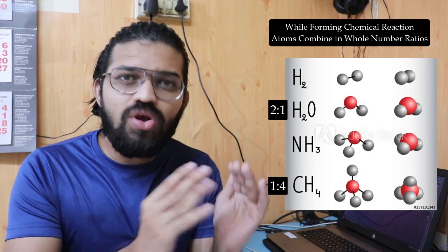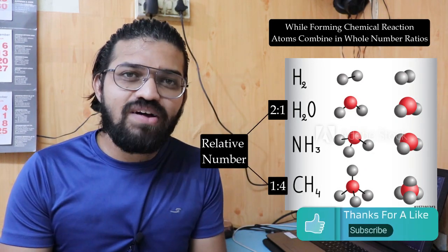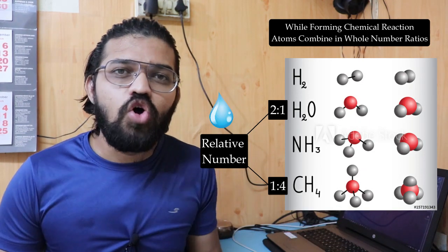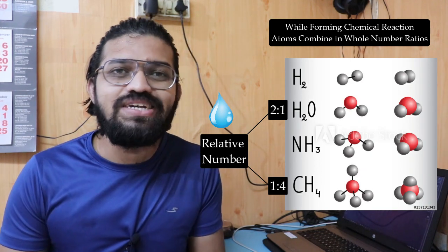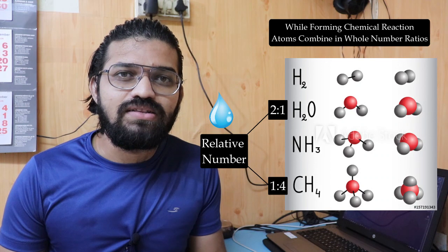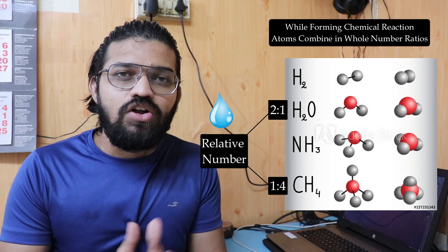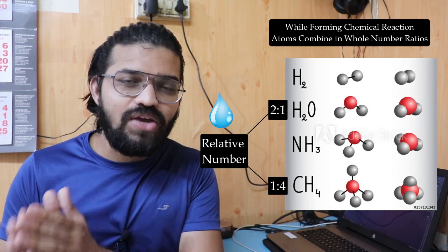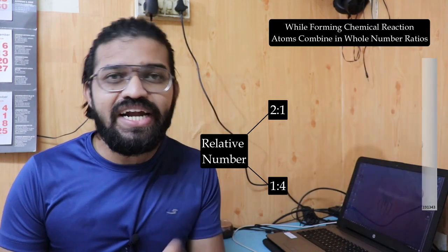This whole number ratio is called the relative number, and it remains the same for a given compound. For example, water anywhere in the world has the same atomic arrangement and pattern, regardless of its state — solid, liquid, or gas. Its main constituents and relative number are always the same.